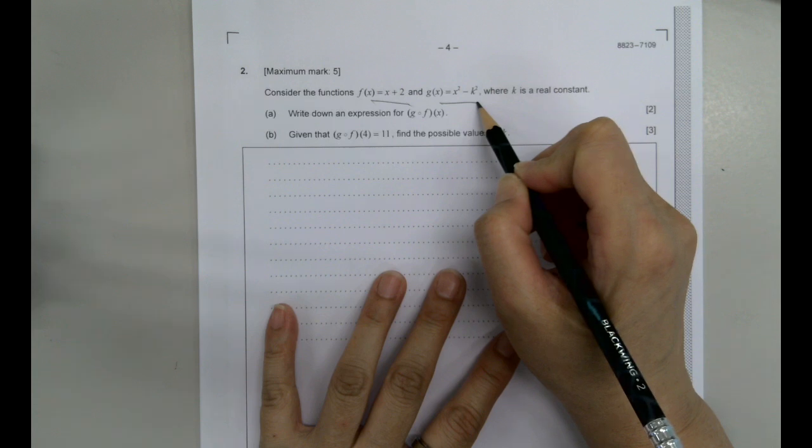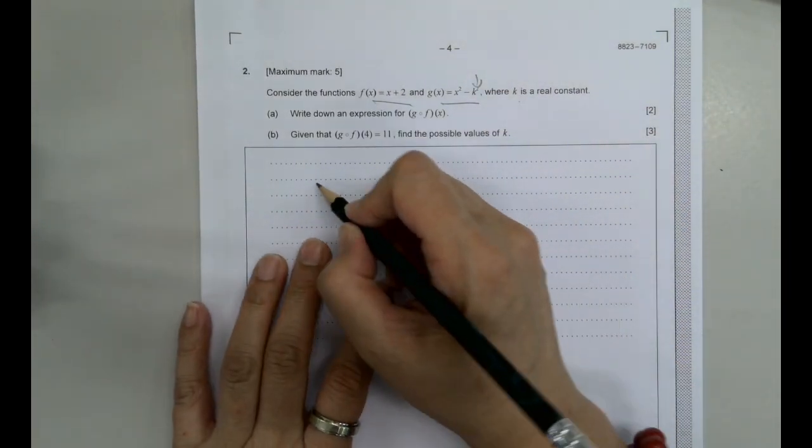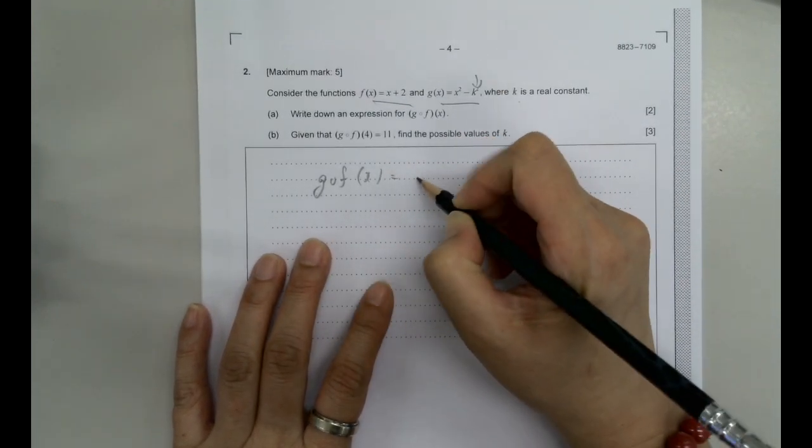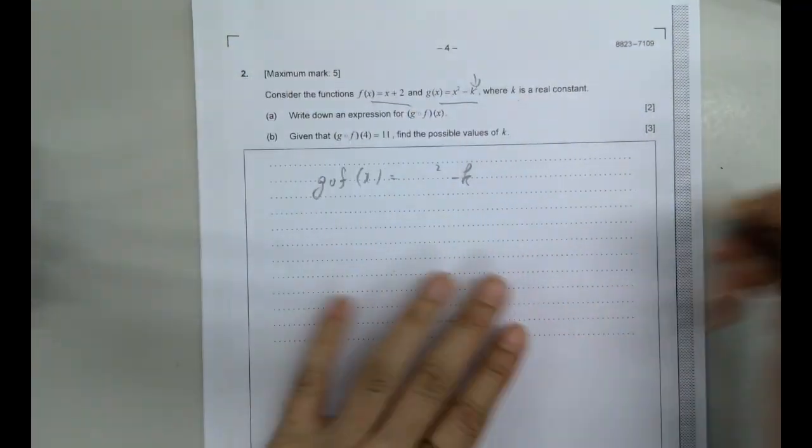We got f, we got g, g with a k there and it's a constant. So we've got gof in terms of k. So gof of x means that we want g and we want to replace whatever's in g with x.